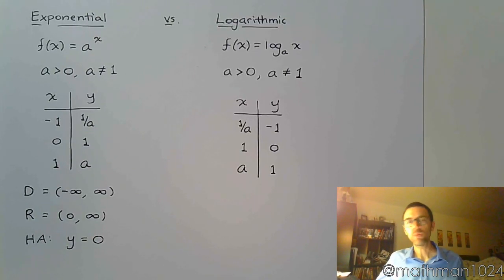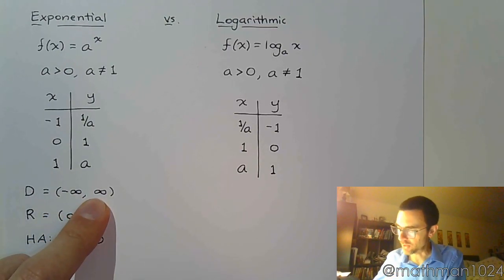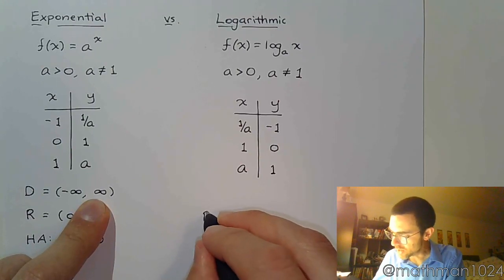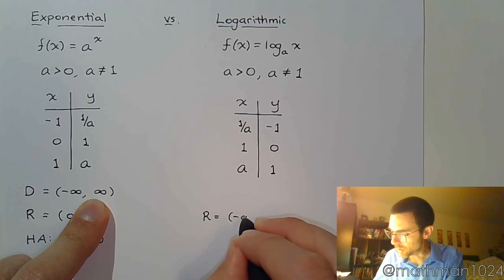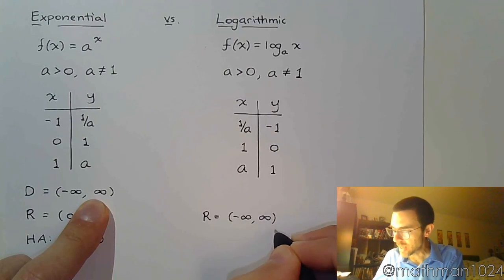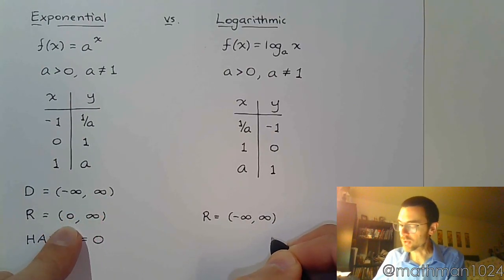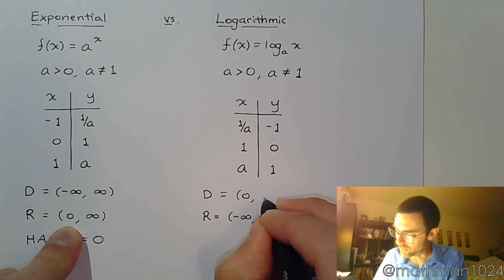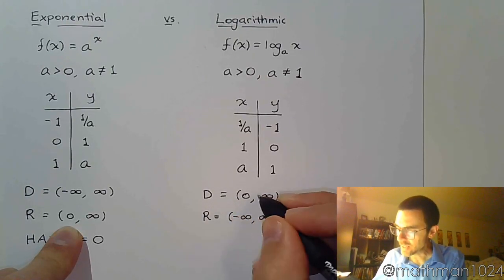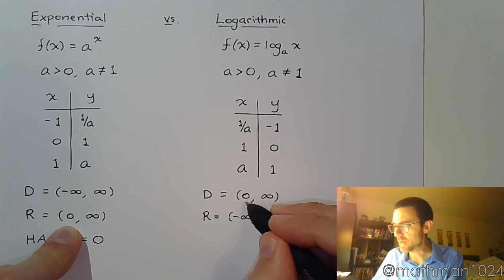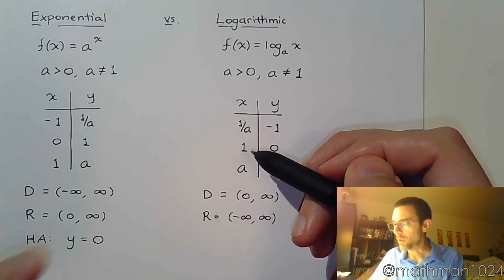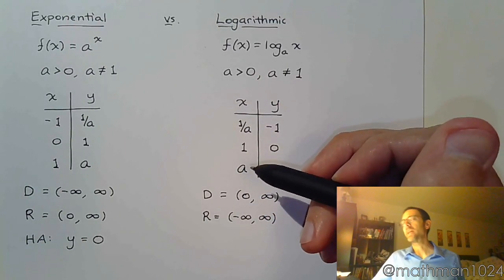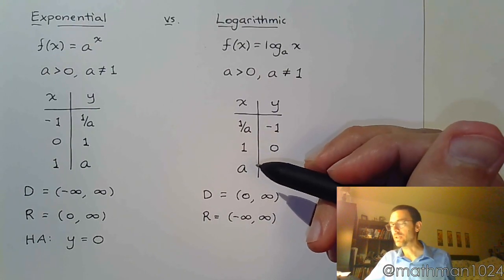So let's talk about what that means for the inverse, for the logarithm. Well, if the domain is negative infinity to infinity, that means that his range is going to be all real numbers. And if the range of the exponential is zero to infinity, that means the domain of the logarithm is from zero to infinity. Again, not including zero, which kind of matches up with, well, we'll get to that here in just a moment, why we can't include zero.